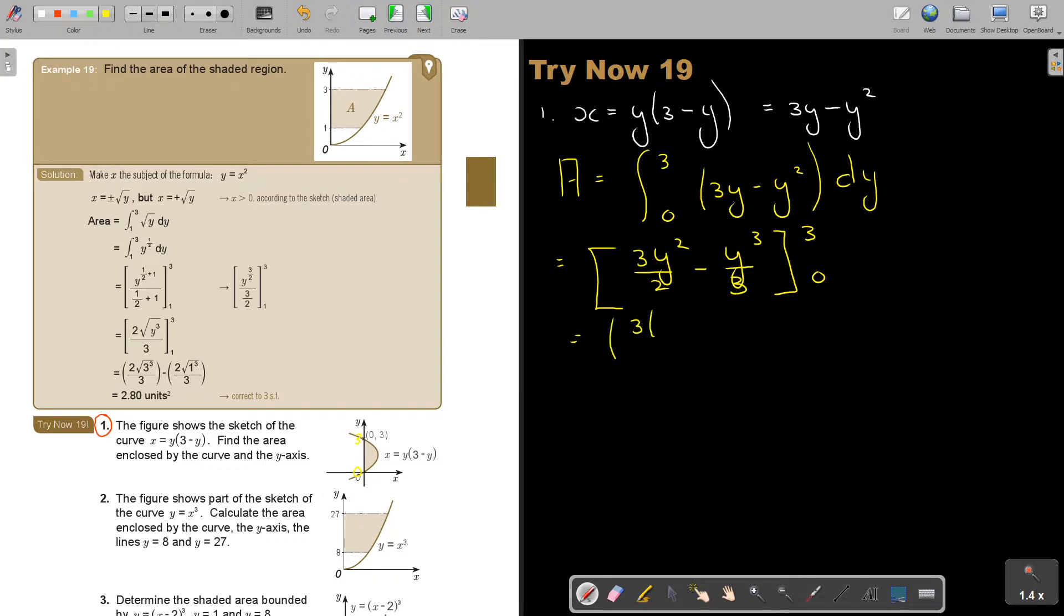So it's 3 and it's 3 squared over 2 minus 3 to the power of 3 over 3 minus. Okay, and then it's 3 times 0 squared over 2 minus 0 to the power of 3 over 3 and close.